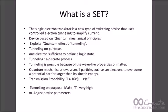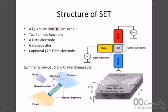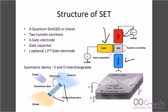The structure of SET: it consists of a quantum dot or island, two tunnel junctions made up of insulators, a gate electrode, and a gate capacitor. Like a conventional transistor, we have a source, a drain, and a gate. The insulators sit at the ends of the two metal electrodes, and the channel consists of a quantum dot — also known as an artificial atom or Coulomb island, all synonymous terms for quantum dot.